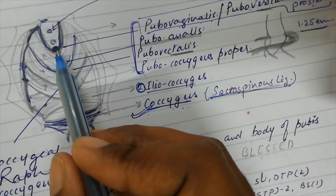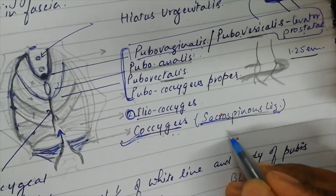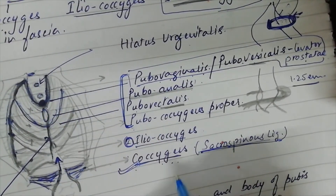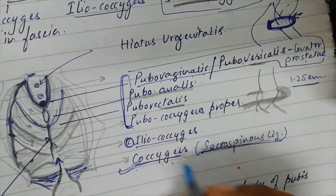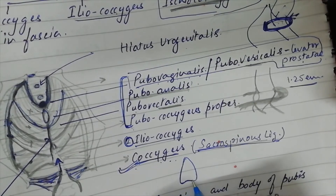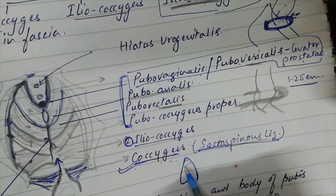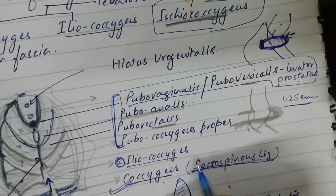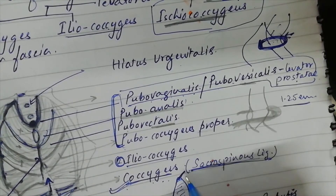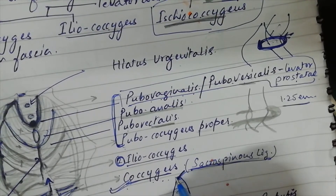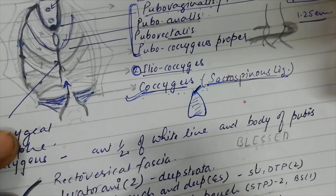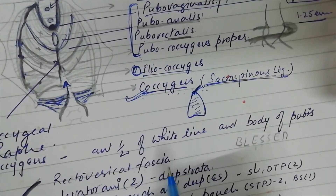The perineal body is a fibromuscular node situated in the perineum. When seen in a sagittal view, it is a pyramidal structure. At its apex it receives the attachment of the rectovesical fascia, or rectovaginal fascia.